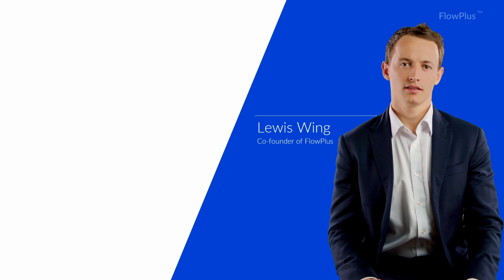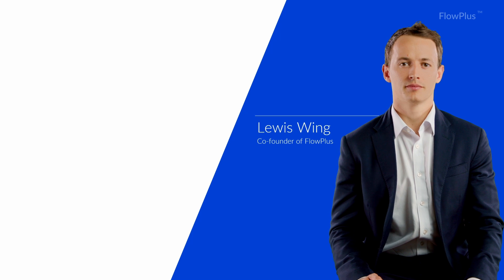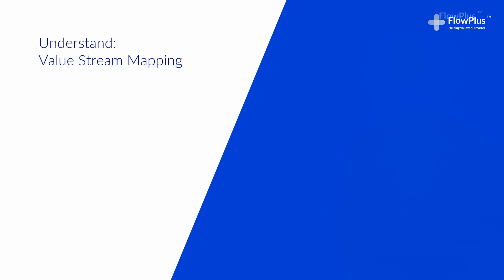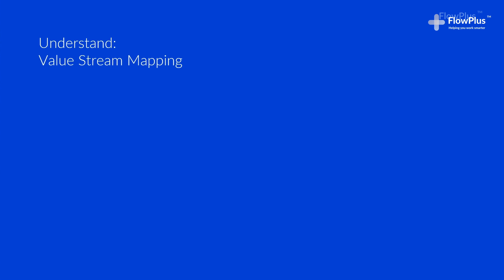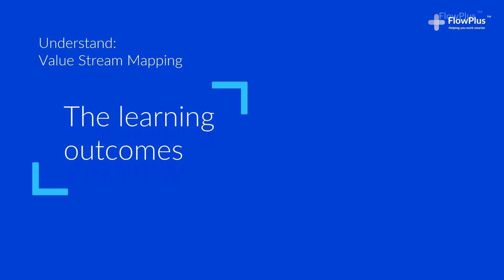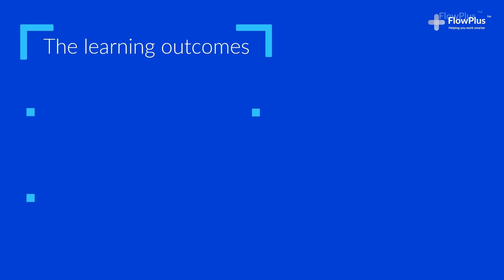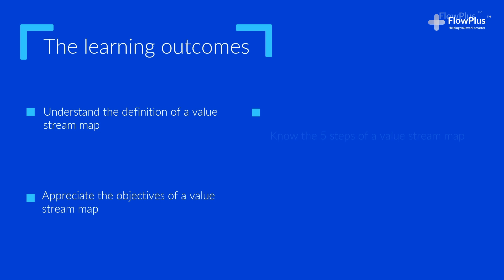Hi, it's Lewis Wing, your Continuous Improvement Coach from Flow Plus. This is an understand module designed to give you a quick overview of a tool before we learn how to practically apply or use it. By the end of this module you'll understand the definition of a value stream map and what it is, you'll appreciate the objective of it and know the five steps to follow.